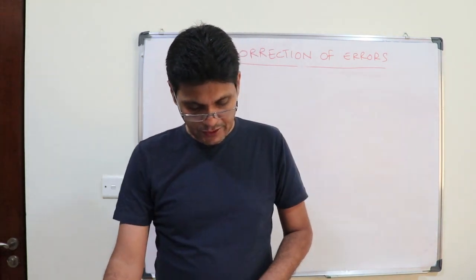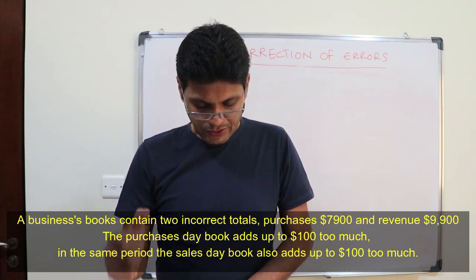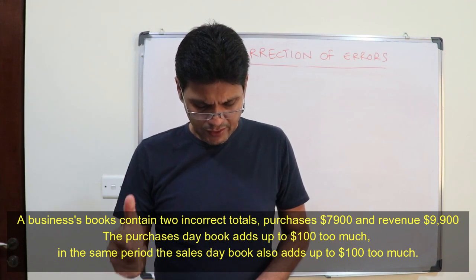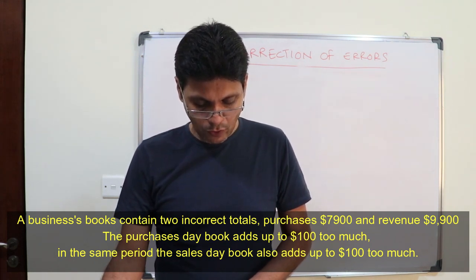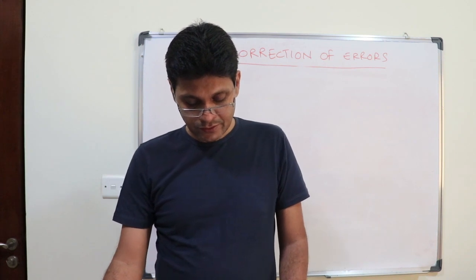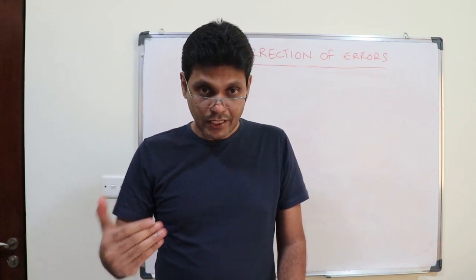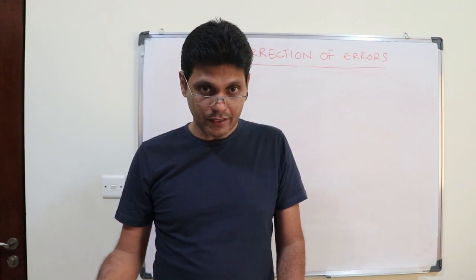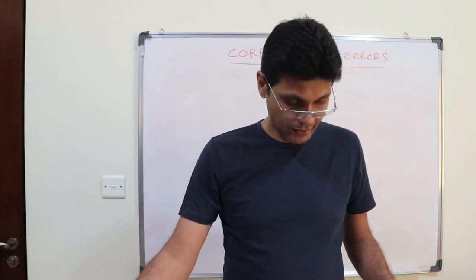Next one: a business's books contain two incorrect totals — purchases of seven thousand nine hundred dollars and revenue of nine thousand nine hundred dollars. The purchases day book adds up to one hundred dollars too much, and in the same period the sales day book also adds up to one hundred too much. The purchases day book is over by one hundred dollars and the revenue account is also over by one hundred dollars — so therefore it's compensating. These are compensating errors.